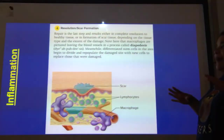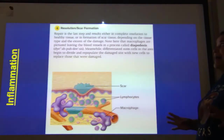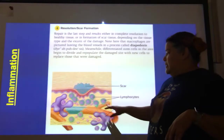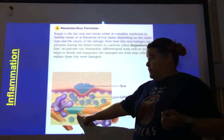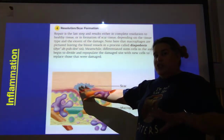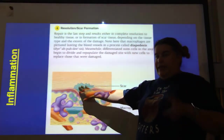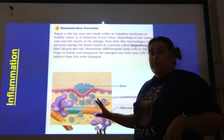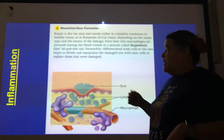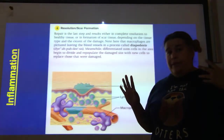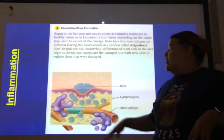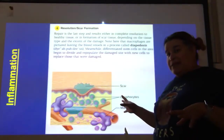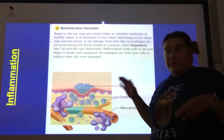Resolution and scar formation. Once we have as much of the damage repaired as possible, our last step is to put healthy tissue or scar tissue in place to heal the wound. You can see the blood vessel and skin have been repaired, but we have a scar — scar tissue is connective tissue, different from regular skin tissue. Macrophages come in late in the infection for clean-up, taking care of the last bacteria and replacing damaged tissue.